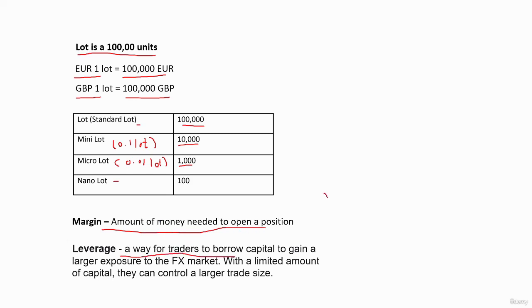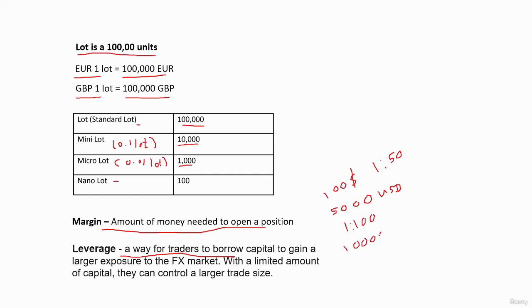Imagine you have a 100 USD trading account with leverage of 1:50 — you can place orders worth 5,000 USD. If the leverage is 1:100, then you can place orders worth 10,000 USD.